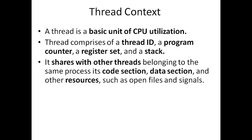Though a thread has its own context, it still shares various other details with the remaining threads of the same process. Threads of the same process are like child processes of that particular process, sharing many details. For example, all threads of the same process have the same process ID, the same memory region, and they share all the resources of the process. Whatever variables are declared in the process are accessible by all the threads. So threads have a very tight bond between themselves with no boundary restriction among multiple threads of the same process.